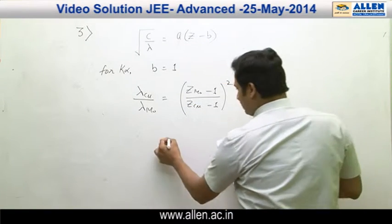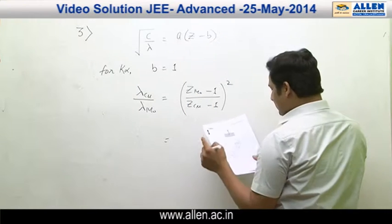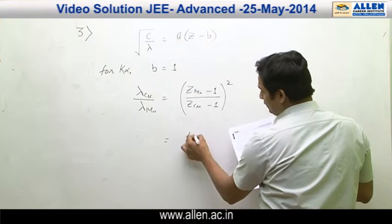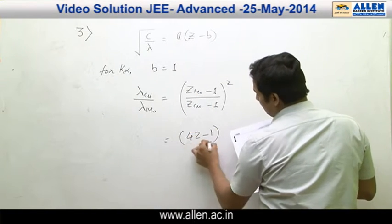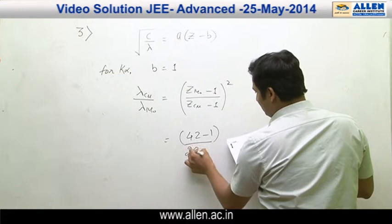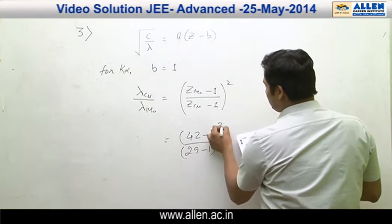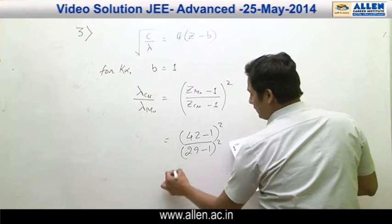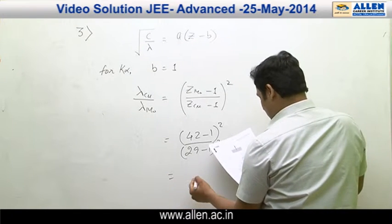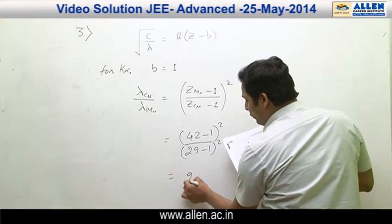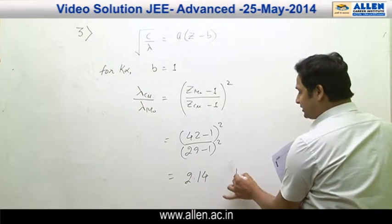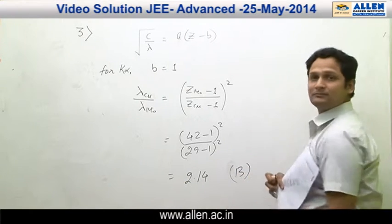Substituting values: Z of molybdenum is 42, so (42 minus 1) divided by (29 minus 1), squared. After solving we get 2.14. Hence the answer is option number B.